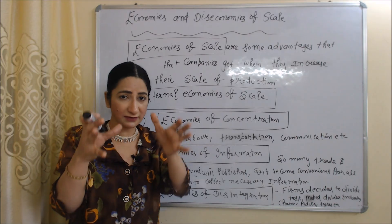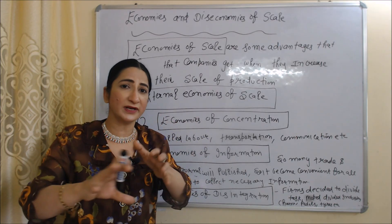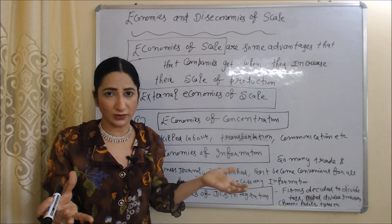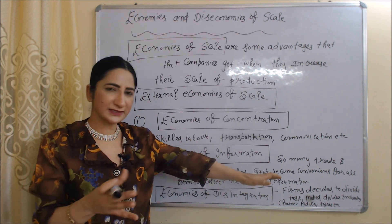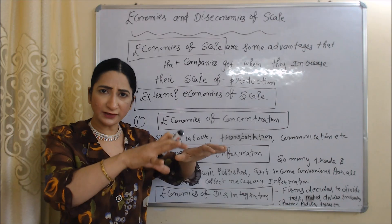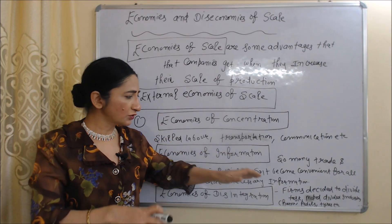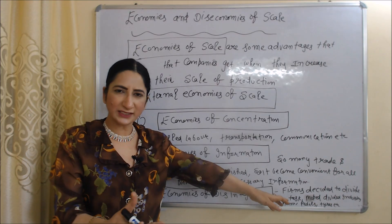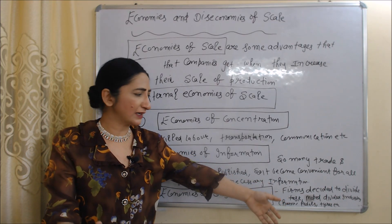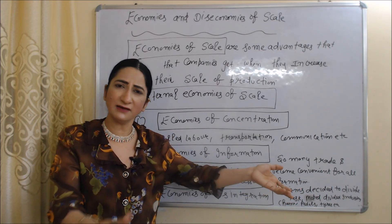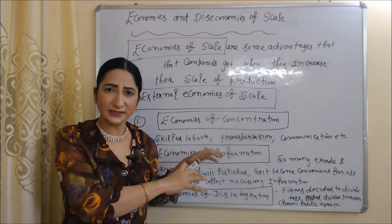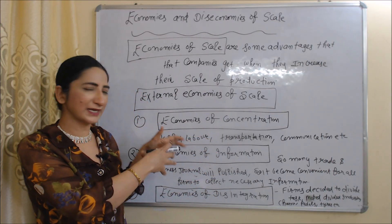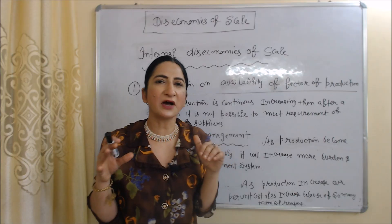Last is economies of disintegration: when the whole industry is expanding, the industry divides its tasks among many firms so that each task is performed by experts only. For example, the moped industry divides tasks into different firms — those expert in chains will produce chains, those expert in pedals will produce pedals, and those expert in tires will make tires. By this, each firm can get many advantages. This is called external economies of scale.